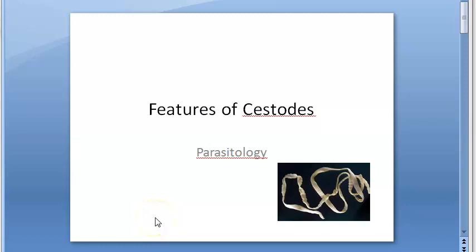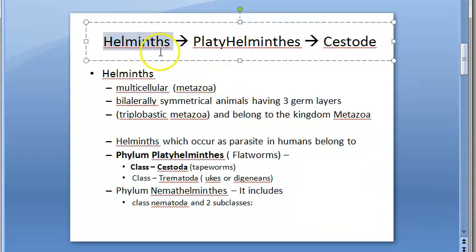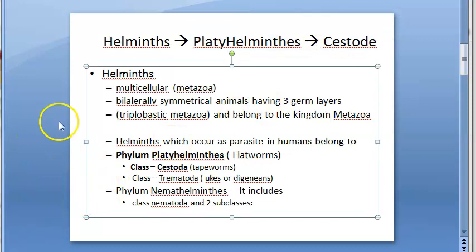In this video we look at the features of cestodes, which can come as an exam question. Cestodes are tapeworms. In Kingdom Animalia, under helminths, you have platyhelminthes, and under platyhelminthes you have cestodes.